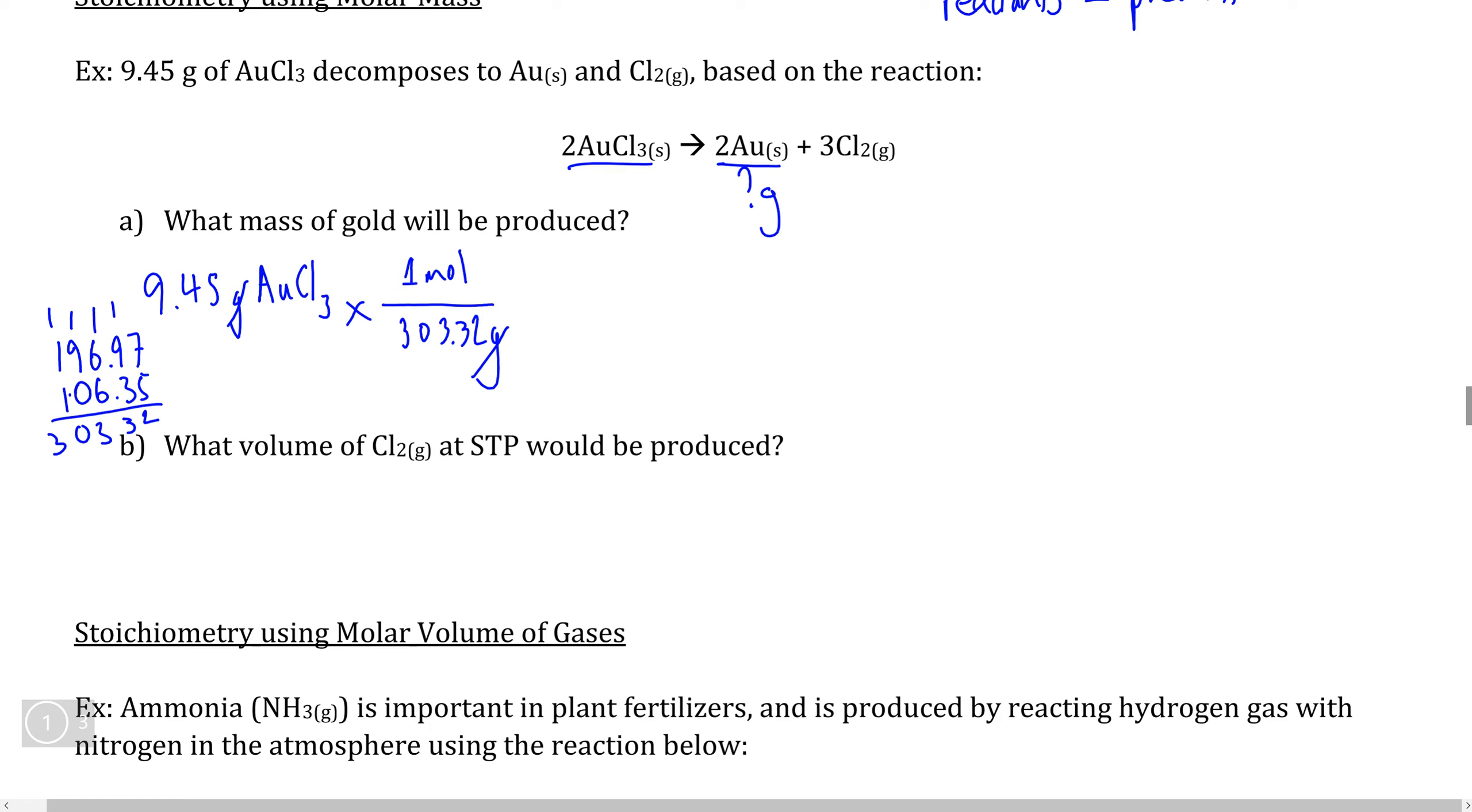However, the question is not asking for the moles of AuCl3. It's asking for the number of grams of gold, which means we need another conversion factor that we've never used before that converts one compound or element, one reactant or product into another reactant or product. So the way that this conversion factor works is, based on our equation...